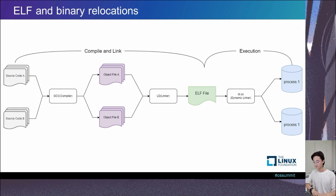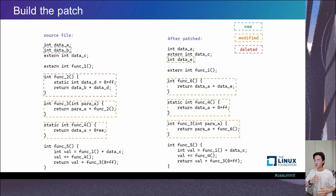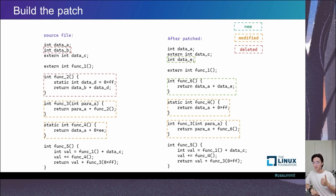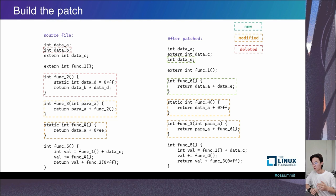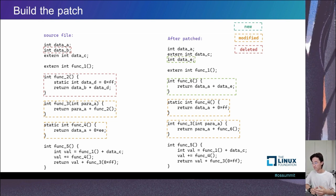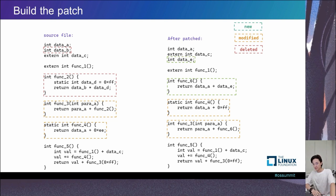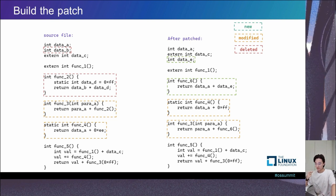Codes are composed of data and functions. After applying a diff file, three changes are possible: new, modified, and deleted. In our example, data B is deleted, data E is new, function 2 is deleted, function 3 and function 4 are modified, and function 6 is new. When we build the patch, we find modified functions. These modified functions may refer to other new parts, like function 6. So, building the patch means: after applying the diff, compile and find parts which include modified functions or are referred to by modified functions.